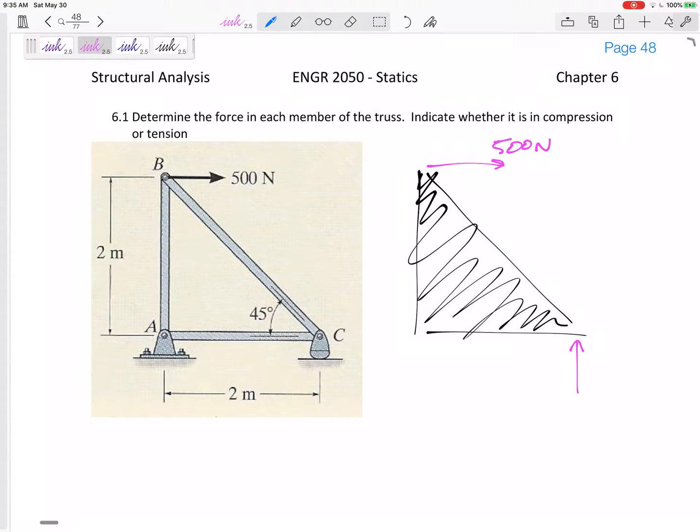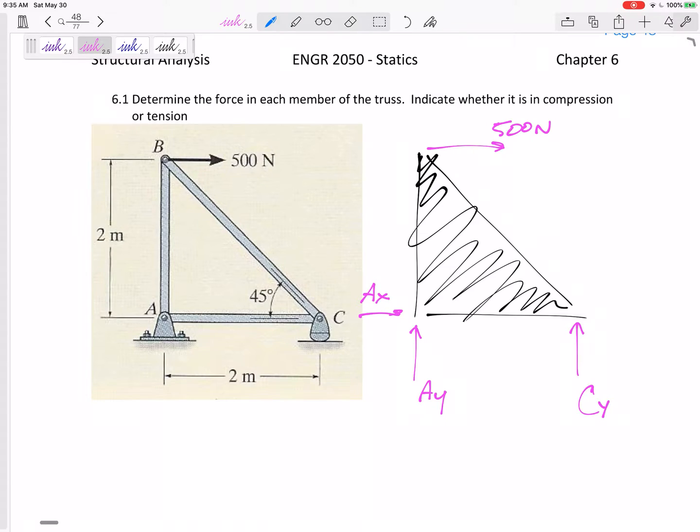It has a rocker at C, so this would only have like a Cy, and then there's a pin at A, so I would draw on an Ax and an Ay. So let me look at the whole free body diagram to solve for Ax, Ay, and Cy.